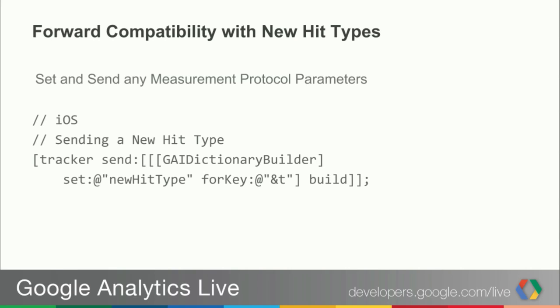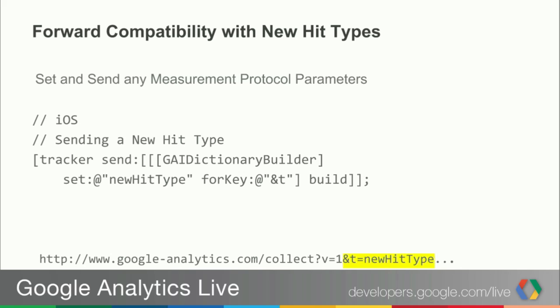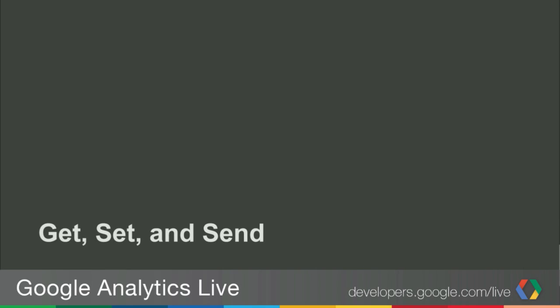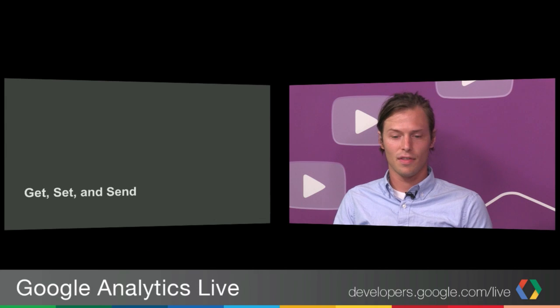Here's an iOS code snippet showing how you might send an arbitrary parameter in v3, using the Dictionary Builder and Map Builder classes. You can see a quick example of how to set and send an arbitrary parameter in v3, and how that shows up in the hit that's generated. Now let's get into the meat of v3 around using the get, set, and send methods.